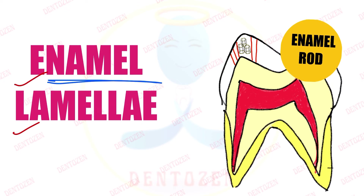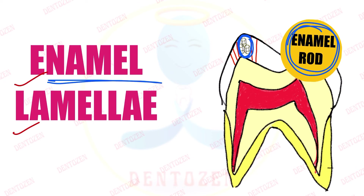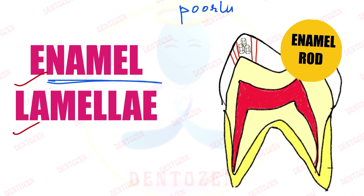Enamel is made up of enamel rods, and what is present inside enamel rods? Calcium hydroxyapatite crystals. But sometimes these rods may not be properly calcified — that means they are poorly calcified, meaning they may not have enough calcium content.